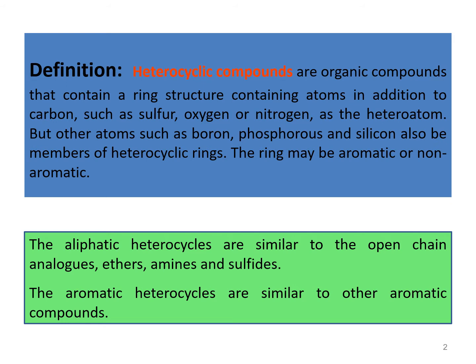Heterocyclic compounds are organic compounds that contain a ring structure with atoms in addition to carbon, such as sulfur, oxygen, or nitrogen as the hetero atom. Other atoms such as boron, phosphorus, and silicon can also be members of heterocyclic rings. The ring may be aromatic or non-aromatic. For example, pyridine, where nitrogen is present in addition to carbon.